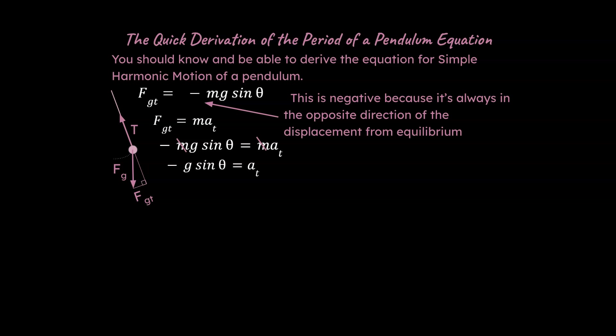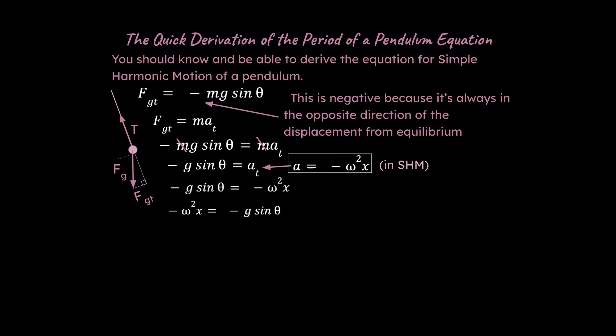We need to recall that for simple harmonic motion, acceleration is equal to −ω²x. I've done another screencast — I'll put a link in the upper right — that'll help you understand why we can say that. For now, we go ahead and substitute that value in for acceleration, switch the sides of the equation, and get rid of the negative signs, and we're left with: ω²x = g sinθ.